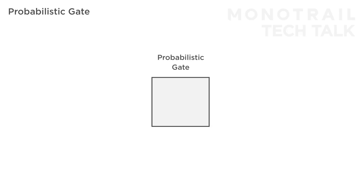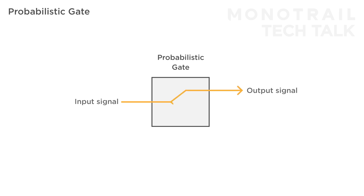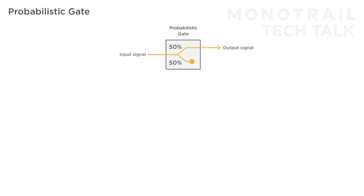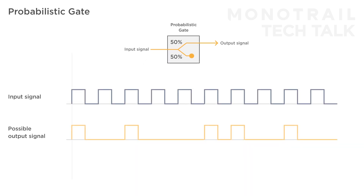A probabilistic gate is a simple function that responds to incoming high voltages, like trigger and gate signals. Every time the module receives a high input signal, it randomly decides whether that signal is passed on to its output or blocked within the module. You have some influence over the decision making by setting the probability for each possible outcome. For example, you can give both outcomes an equal 50-50% chance.